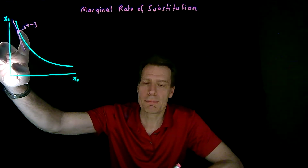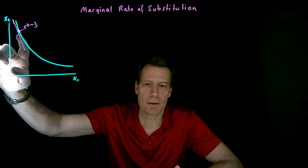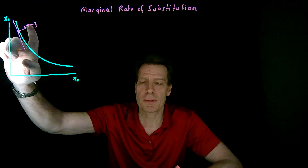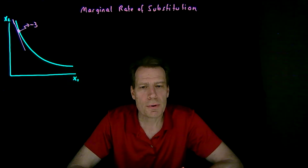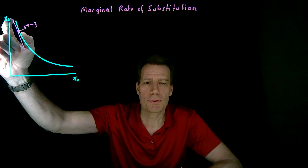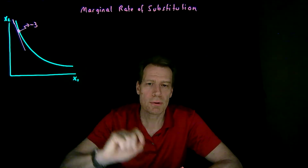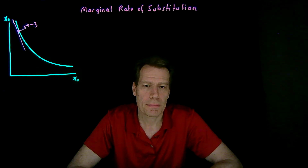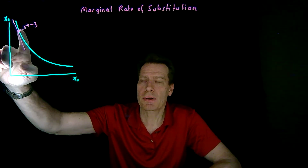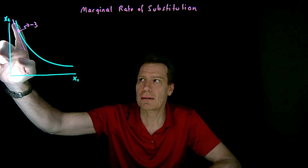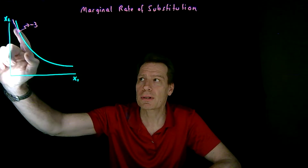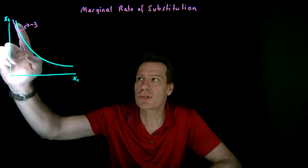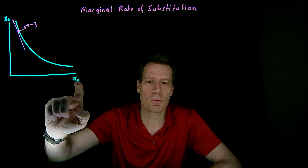That means that when I'm around that bundle, I can go down by 3 on the vertical dimension and over by 1 on the horizontal dimension and end up roughly on the same indifference curve. In other words, I'm willing to give up roughly 3 units of x2 to get 1 more unit of x1, because that's going to keep me roughly as happy as I was before. So the slope of the indifference curve at this bundle tells me the rate at which I'm willing to trade x2 for x1 — I'm willing to substitute roughly 3 of x2 for 1 more of x1.